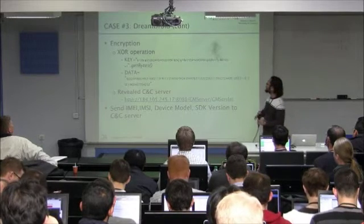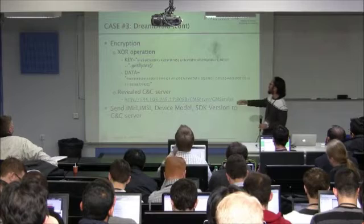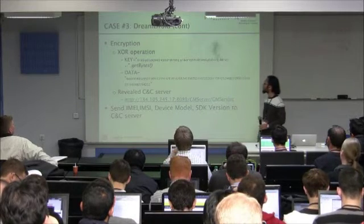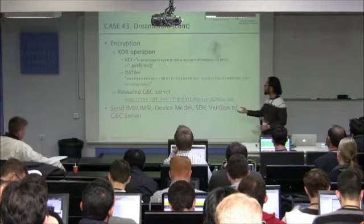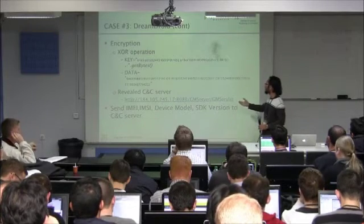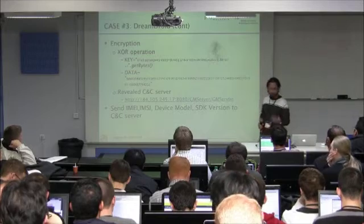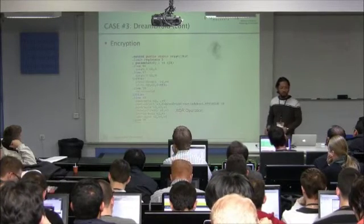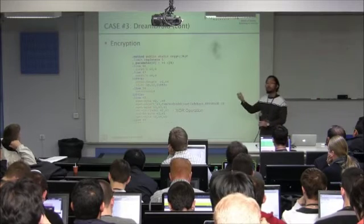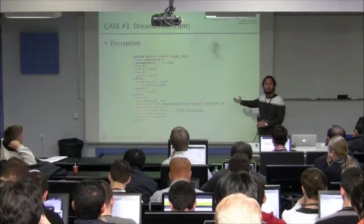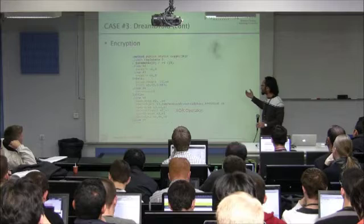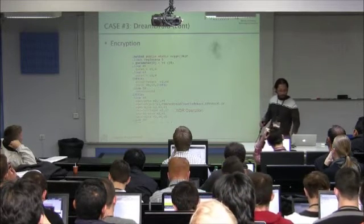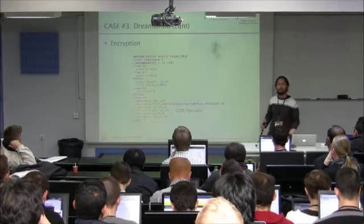This is the encryption. You have the keys, you have the data — this is the CNC data. It sends a bunch of information like Gmail account, IMSI, device model as identification to the CNC server. The encryption is a customized XOR operation. So grabbing strings is not going to help much — you still need to look at the code.